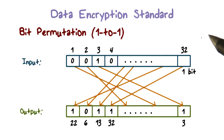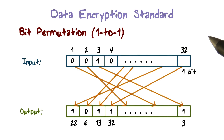Recall that diffusion is one of the principles in encryption, and it is typically achieved through permutation. In DES, permutation works by changing the positions of the bits.